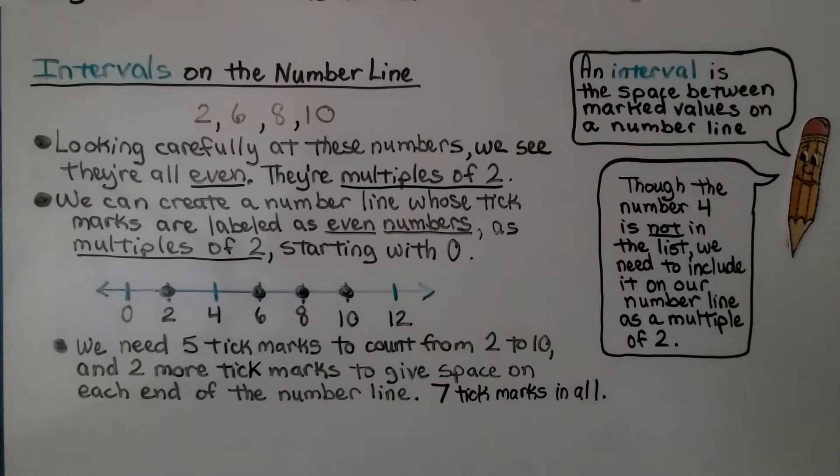And we can create a number line whose tick marks are labeled as even numbers, as multiples of 2. We're going to start with 0. We have 2, 4, 6, 8, 10. Though the number 4 is not on this list, we need to include it on our number line as a multiple of 2.